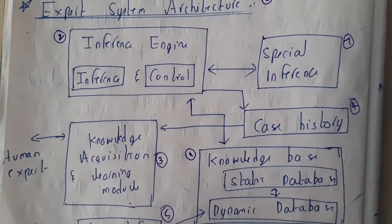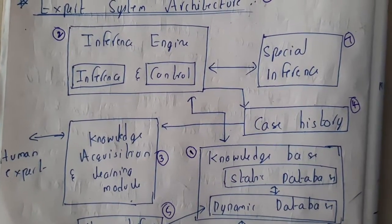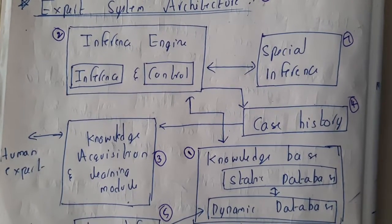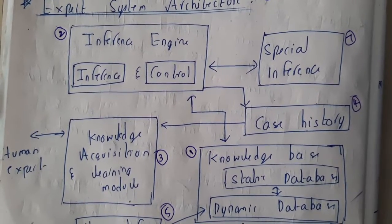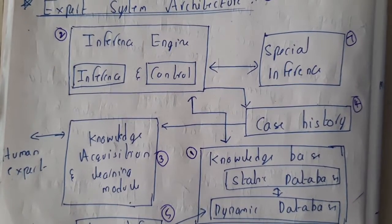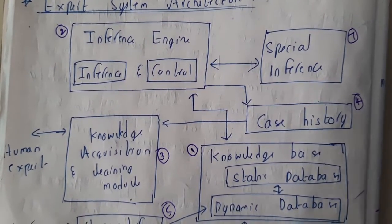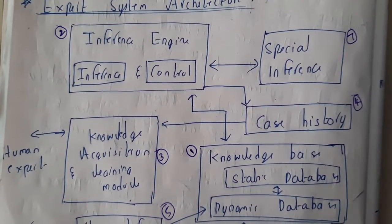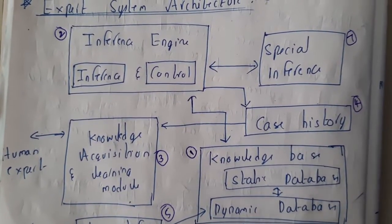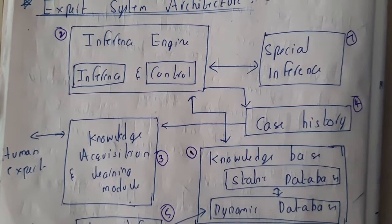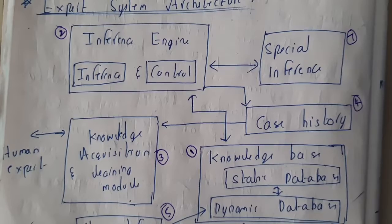Hello guys, we are back with our next lecture. In this lecture let us go through expert system architecture. This expert system architecture is mostly observed in the question paper for directly 10 marks, so if you write it in an elaborated way you can easily score 10 marks, or at least 7 to 8 marks, which will be more than enough.